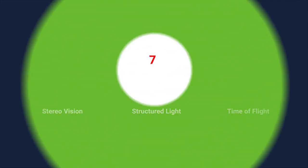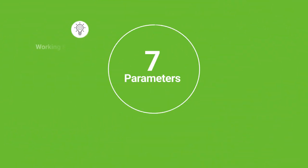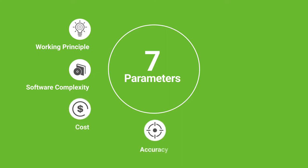We will do this comparison along 7 parameters which include Working Principle, Software Complexity, Cost, Accuracy, Range, Low Light Performance, and finally Compactness. Let us start with the Working Principle.